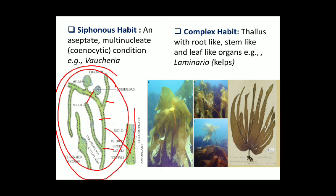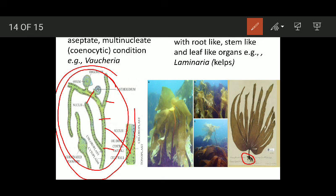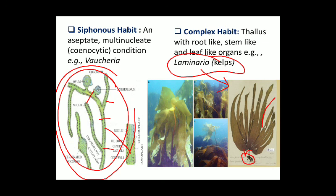Finally, the complex habit. In this type of habit the thallus of algae apparently has root-like, stem-like, and leaf-like organs. These are not true roots, stems, and leaves — the thallus only apparently seems to possess these organs. The example is Laminaria. So this was all about thallus organization in algae.